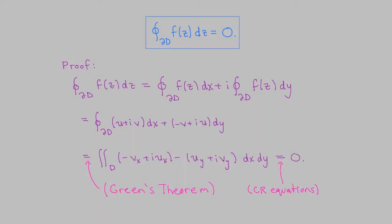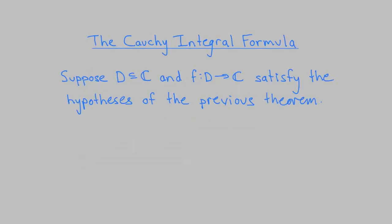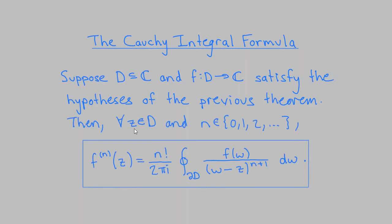Our next important theorem is the Cauchy integral formula. Suppose d and f satisfy the hypotheses of Cauchy-Goursat: d is bounded, open, connected with piecewise smooth boundary, and f is analytic on d extending smoothly to the boundary. Then for any point z in d and any non-negative integer n, the nth derivative of f at z is given by n! divided by 2πi, times the integral around the positively oriented boundary of d of f(w)/(w − z)^(n+1) dw. This is a central theorem used to prove many other results.